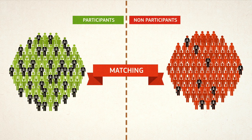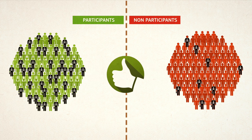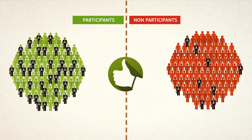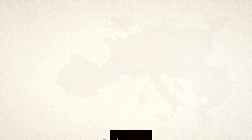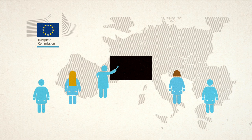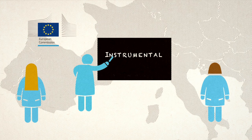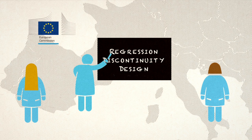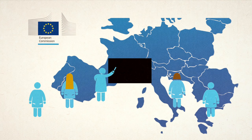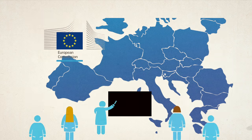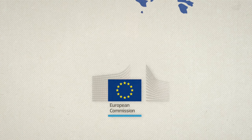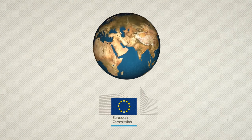Matching is one of the several methods that are used to determine if a programme is successful. Which method to choose is not a simple task. Scientists at the Joint Research Centre advise European member states on the best method to use for each specific case. Moreover, they research the design of new and more efficient methods, also by partnering with international organisations.